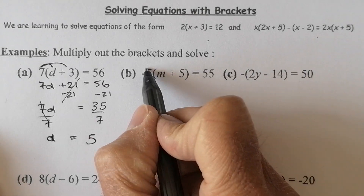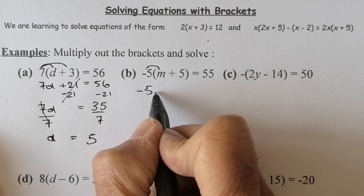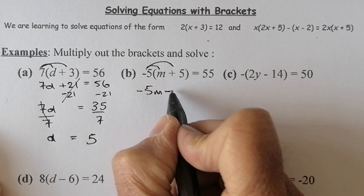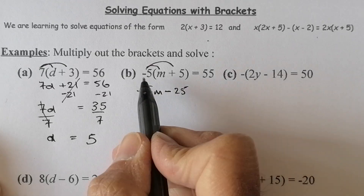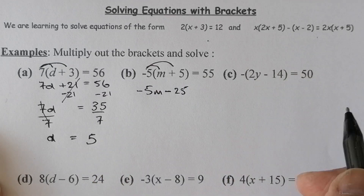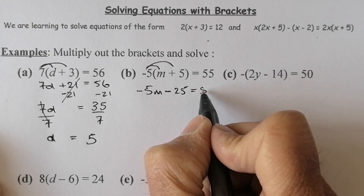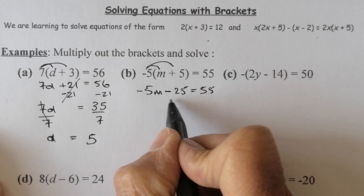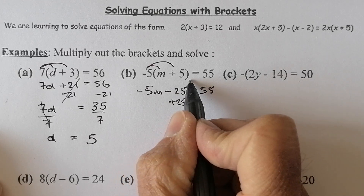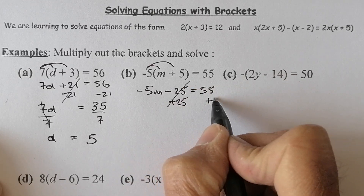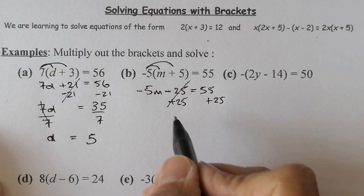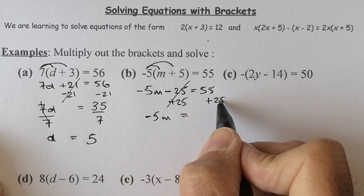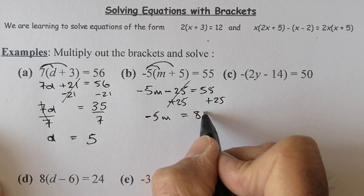I'll multiply this bracket out. So that one times that one gives me minus 5m. Minus 5 times a positive 5 gives me minus 25 — there's only one minus in the calculation, so it's a negative answer. Then I've got 55 sitting here. I don't want that minus 25, so I'm going to add 25 on — that'll cancel it out. I must add 25 to the right-hand side as well.